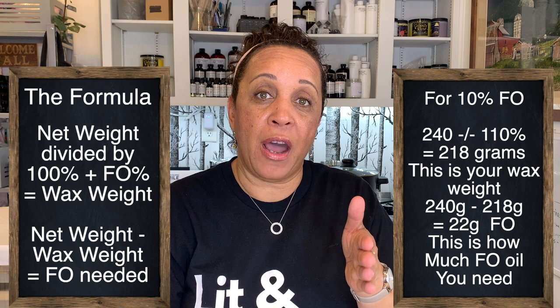Once you have this figured out for one candle, it's just about multiplying for multiple candles. If you're going to make four candles, multiply the 218 grams of wax times four, and then multiply the 22 grams of fragrance oil times four, and then pour equally into your four containers. If you're going to make ten candles, do 218 grams of wax times ten, and 22 grams of fragrance oil times ten. That gives you enough wax with a 10% fragrance load to make ten candles.